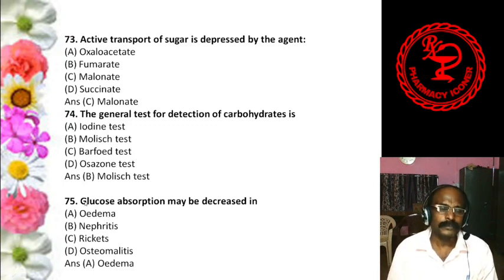Question 36: Invert sugar is — Lactose, Sucrose, or the hydrolytic product of sucrose. The answer is the hydrolytic product of sucrose. Invert sugar contains both glucose and fructose. When sucrose is hydrolyzed, we get glucose and fructose. Students often make the mistake of writing that invert sugar is sucrose — no, it is the hydrolytic product of sucrose.